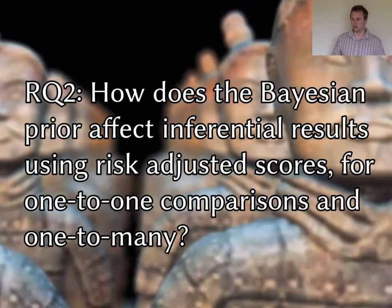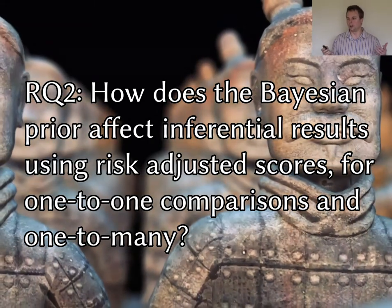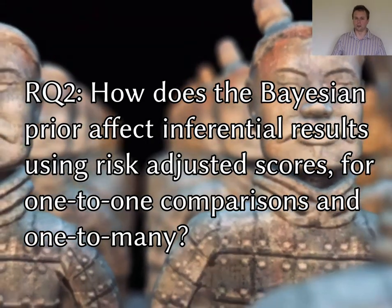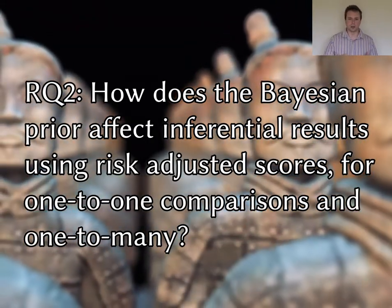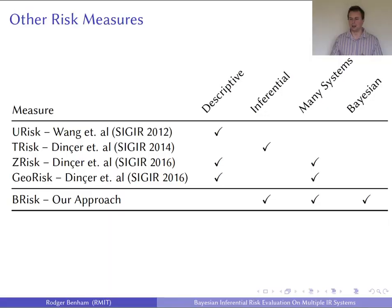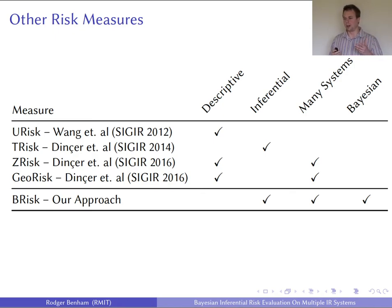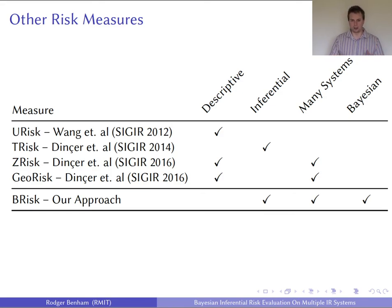Research question two is: how does the Bayesian prior affect inferential results using risk-adjusted scores for one-to-one comparisons and one-to-many? And research question three is: using the other risk measures in the literature, how does our approach compare against them for discriminative inferential differences, and just how much different is it?